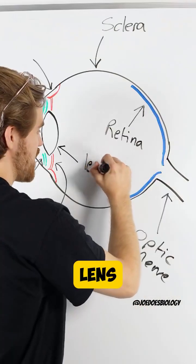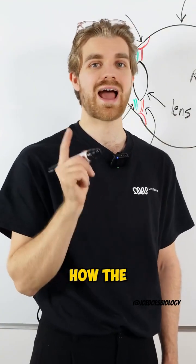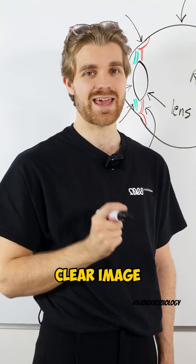This is the lens. This focuses the light onto the retina. Follow to see me break down how the lens works to make a clear image.